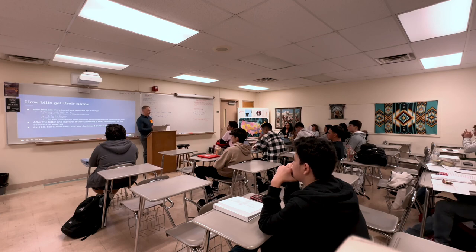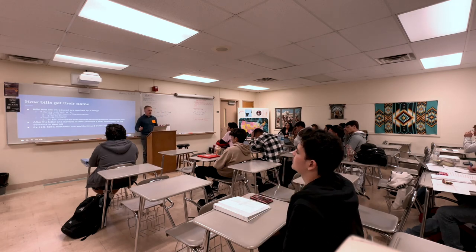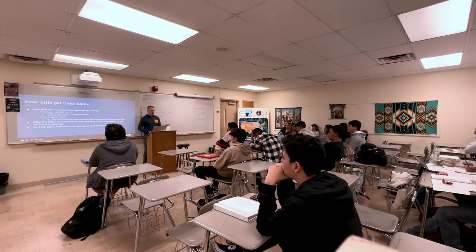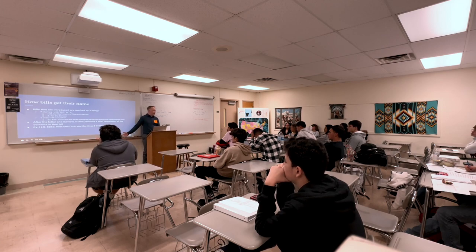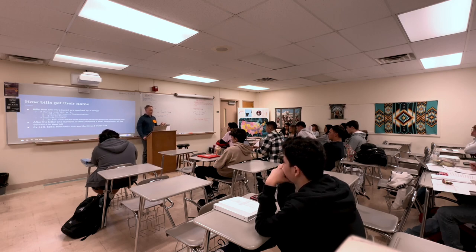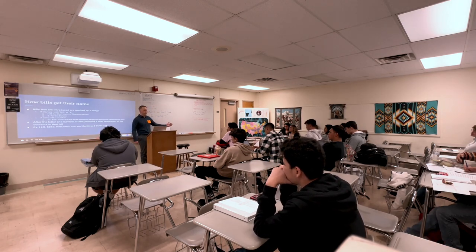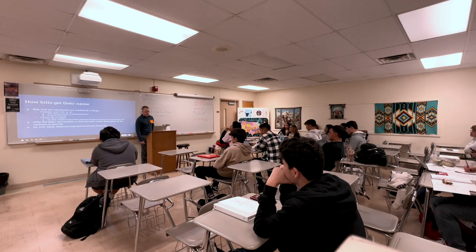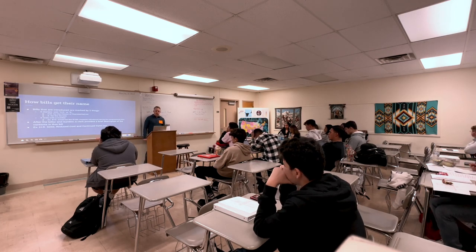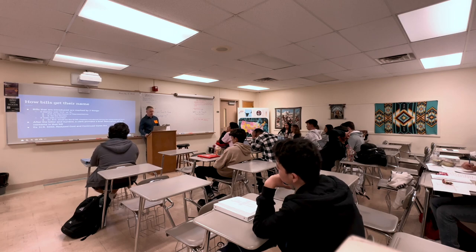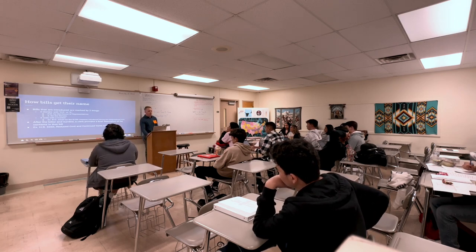Bills that are introduced are marked by two things: they either start with HR for House of Representatives, or S for Senate. After each bill, they end with a number — for example, 810 would be the 810th measure introduced during the Congressional term. Bills are numbered in order of introduction. A clerk also provides a brief description of the contents; for example, HR 5260 was the Reduced Cost and Continued Cares Act.